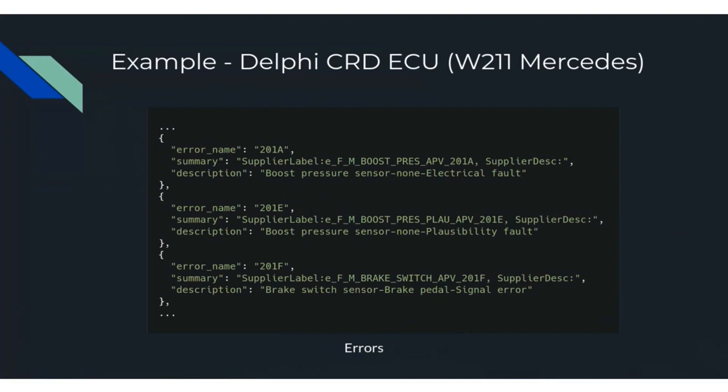Here's an example of some error codes you would see on this ECU. For instance, error code 201A has the description 'boost pressure sensor non-electrical' — very descriptive errors, which would be helpful if you have a check engine light.